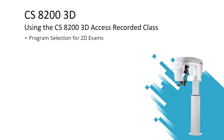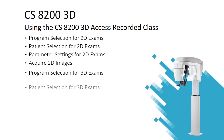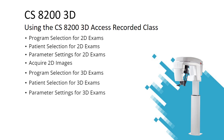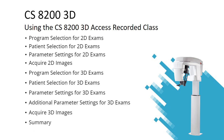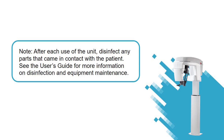CS8200 3D – Using the CS8200 3D Access System. This recorded class is designed for clinical team members and demonstrates how to acquire images using the CS8200 3D Access System. The CS8200 3D Access is designed to capture 2D panoramic images, 3D CBCT images, cephalometric images, and 3D model scanning images. Be aware that after each use of the unit, you must disinfect any parts that came into contact with the patient. See the user's guide for more information on disinfection and equipment maintenance.